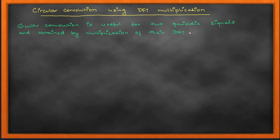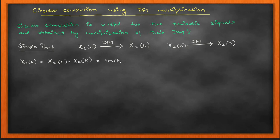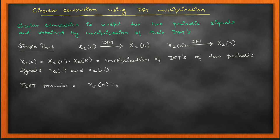Circular convolution is derived from the discrete Fourier transform and is applicable mostly to periodic sequences. Think of it like a clock: the needle goes round and every hour it returns to the same position — that is your periodic signal. We write the sequence in the form of a circle where one circle represents one period, and circular convolution filters two sequences that are both periodic in nature.